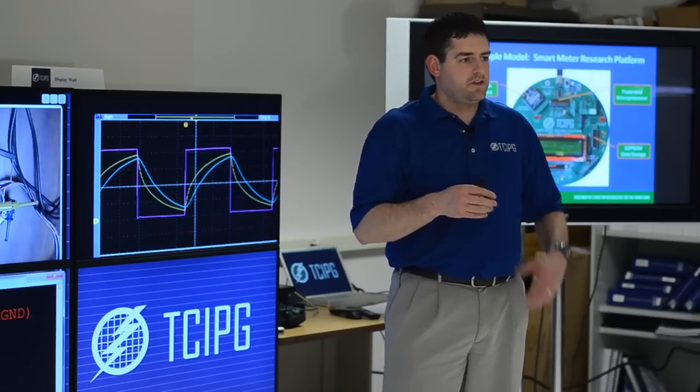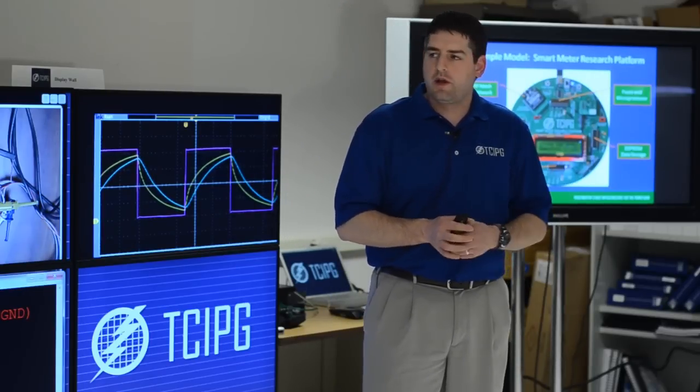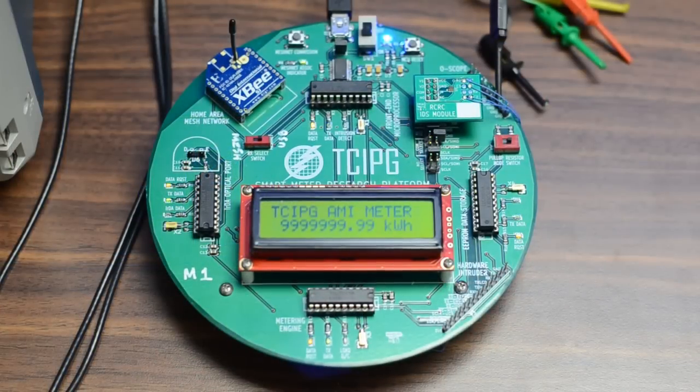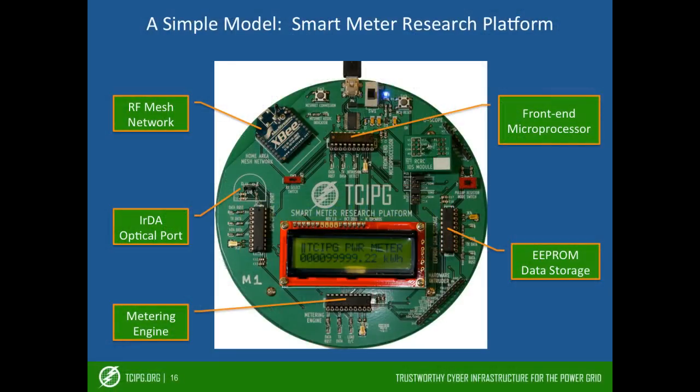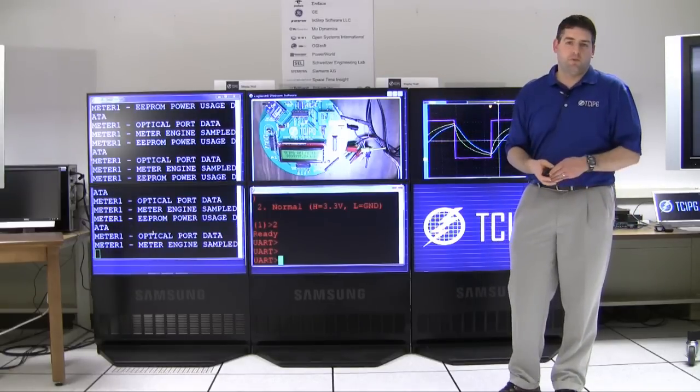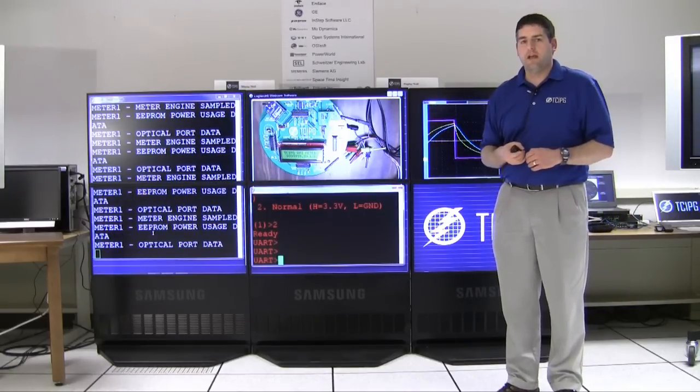To look at the smart meter, we've created a research platform here to help us look into these issues. There are five key functionalities involved. First is the RF mesh network, which we won't be demonstrating today. Then we have the front end microprocessor, which handles all the ANSI C12.22 and the encryption engine. There's onboard data storage in the EEPROM, a metering engine that handles analog sampling of actual energy usage, and the optical port, which is the implementation of ANSI C12.18.